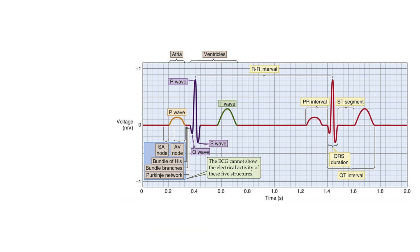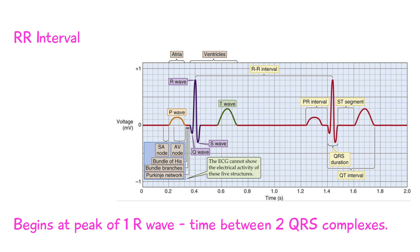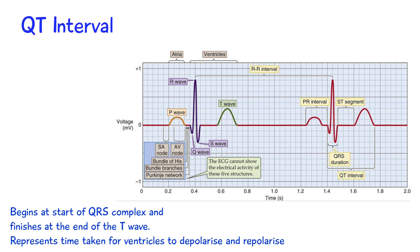The T-wave represents ventricular repolarisation, and this is the small wave which occurs after the QRS complex. We also have the R-R interval, which begins at the peak of one R-wave and ends at the peak of the next R-wave, representing the time between two QRS complexes. And we have the QT interval, which begins at the start of the QRS complex and finishes at the end of the T-wave, representing the time taken for the ventricles to depolarise and then repolarise.